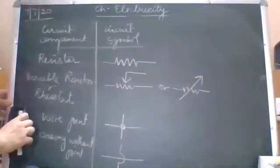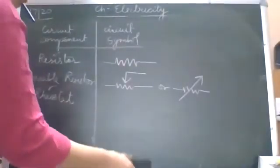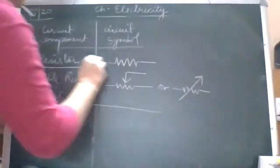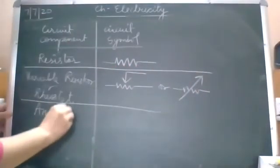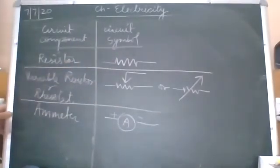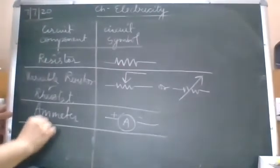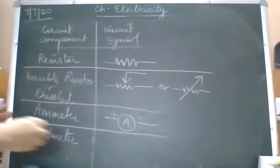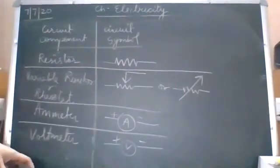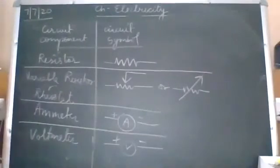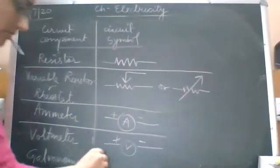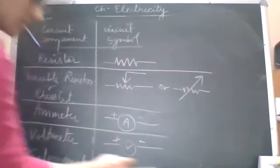Then come ammeter and voltmeter, which are used for measuring current and potential difference respectively. Ammeter symbol is a circle with the letter A written inside. They have fixed positive and negative terminals. Then voltmeter is used to measure potential difference — it is also represented as a circle with V inside. There is also a galvanometer — a very sensitive device which detects very small amounts of current in a circuit, represented as a circle with G inside.